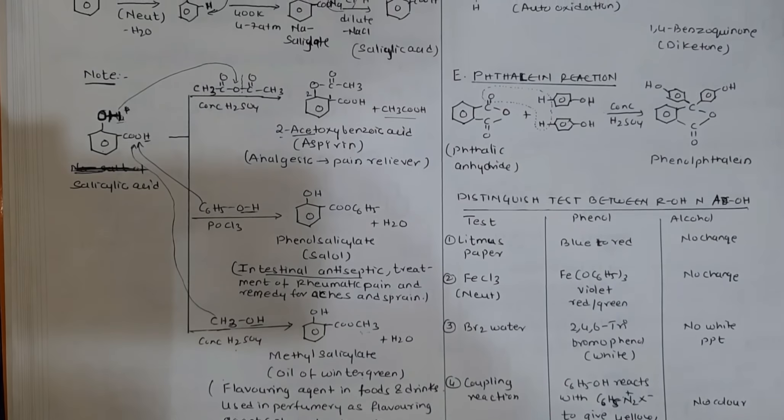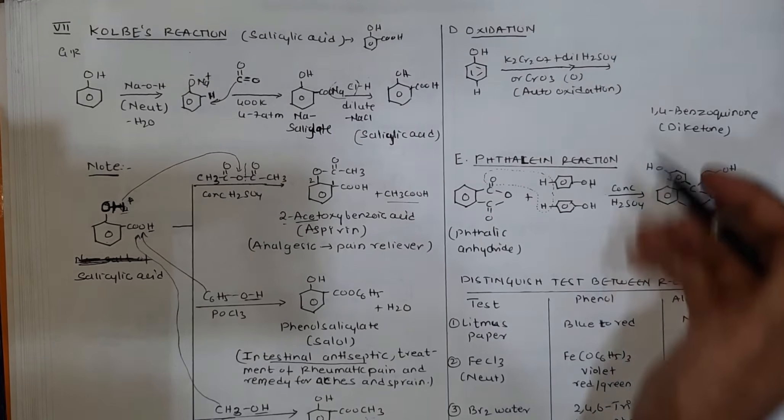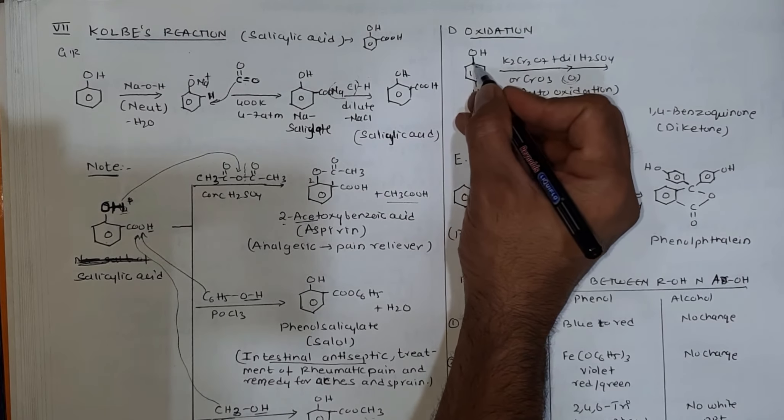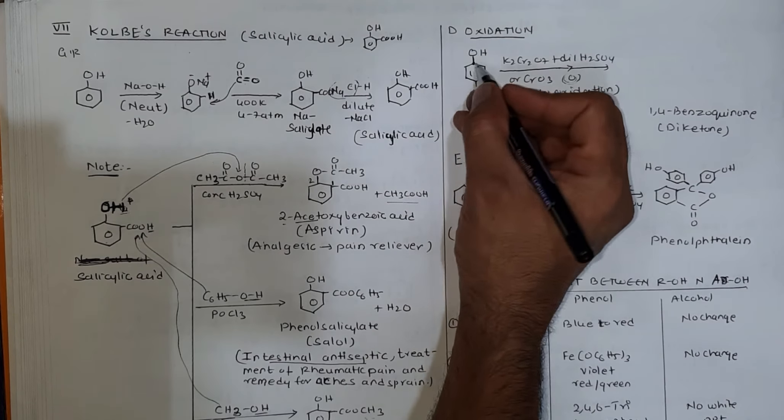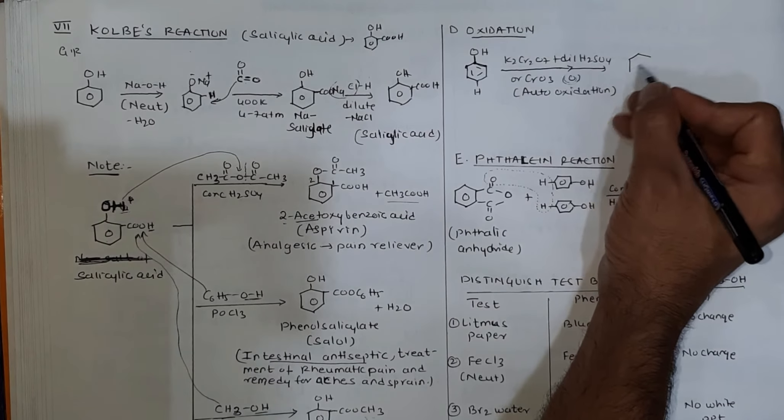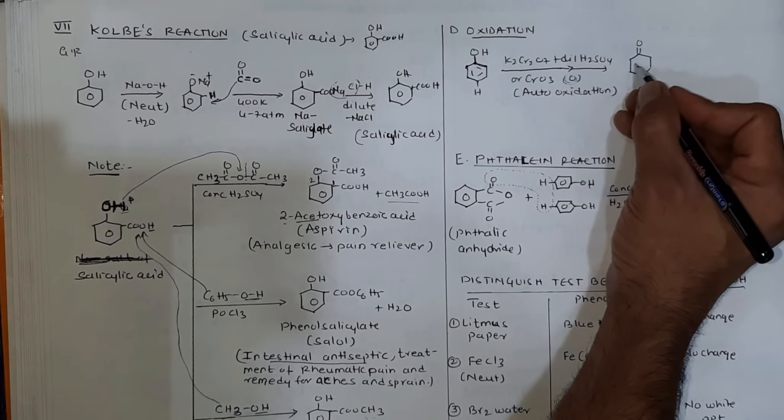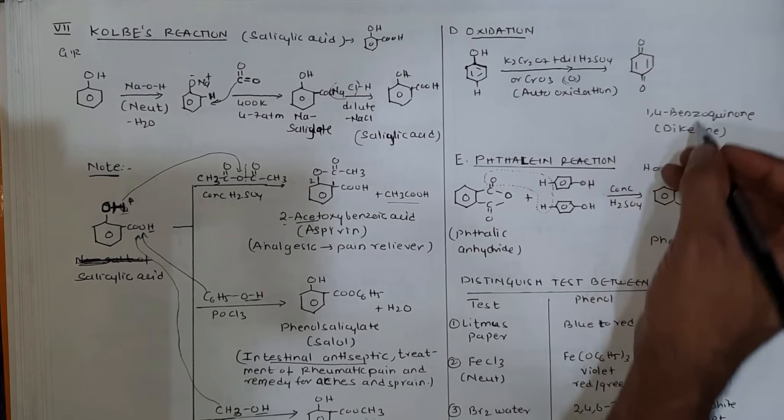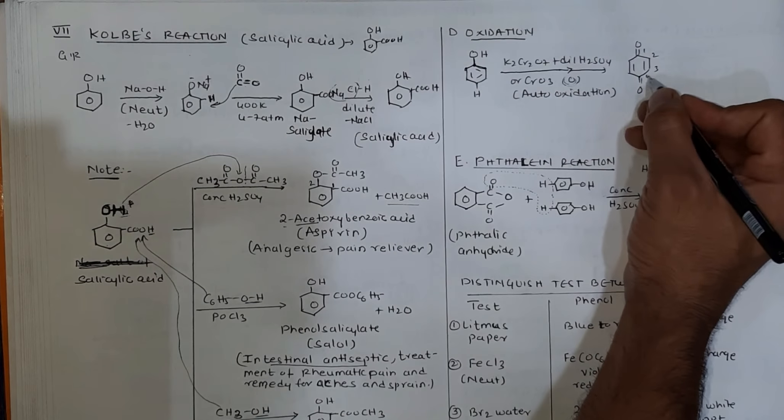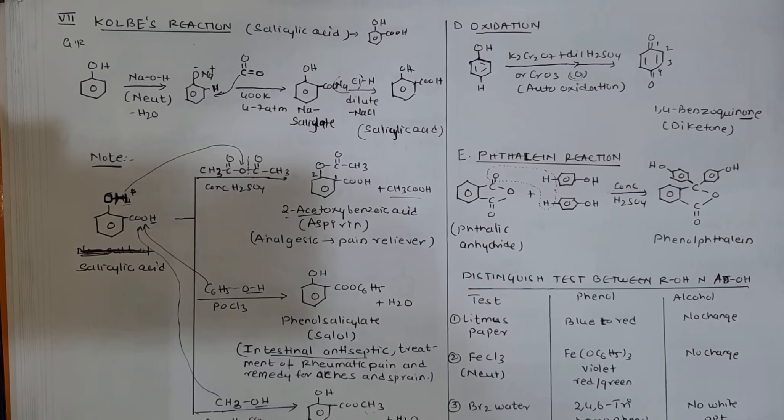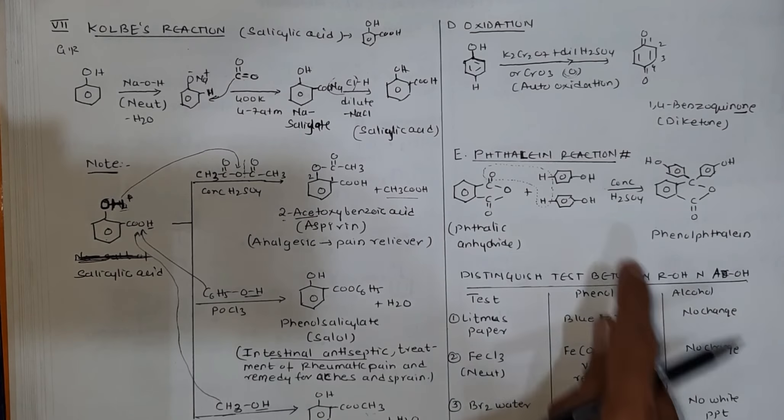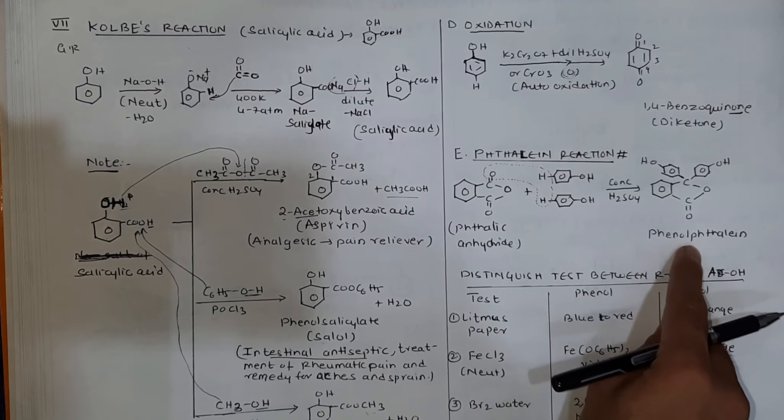Next reaction is oxidation of phenol using K2Cr2O7 dilute H2SO4. Chromic acid undergoes auto-oxidation. This part of phenol is secondary alcohol, and secondary alcohols always get oxidized. The carbon attached to carbon is secondary alcohol in phenol, so it gets oxidized to C double bond O, forming a diketone or 1,4-benzoquinone.